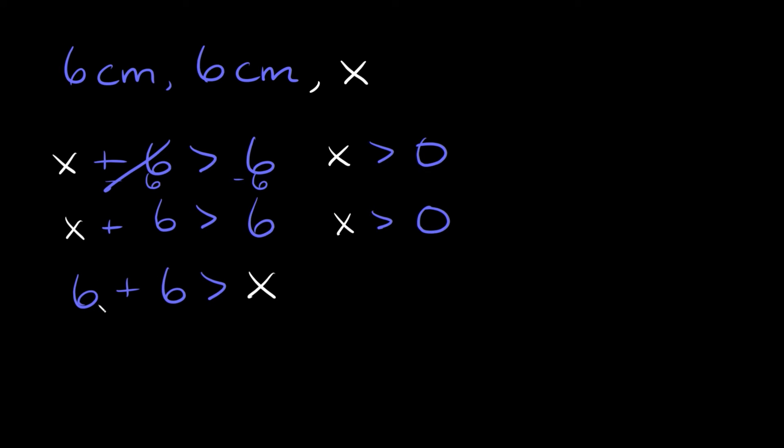And then lastly here we have 6 plus 6 is greater than x. So 12 is greater than x. Or we could write that the other way again. We can say x is less than 12. Okay, so here are our answers again. And these two are obviously the exact same. So our range is just x is greater than zero and x is less than 12. Okay, so our third side can be any length that's between zero and 12.